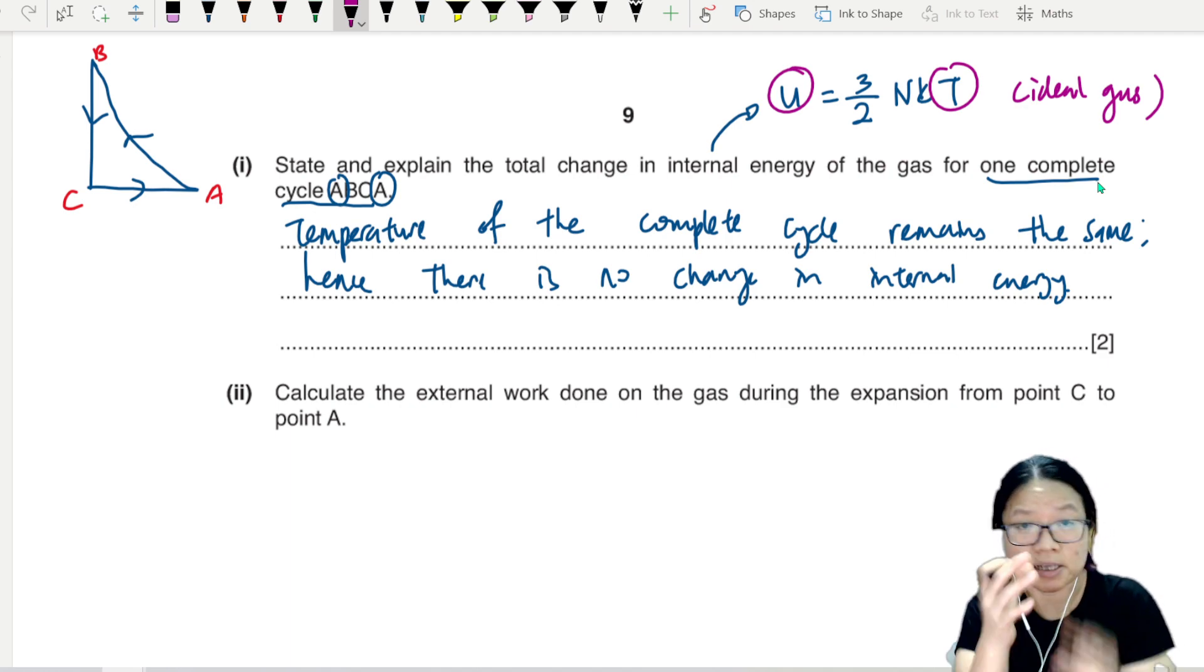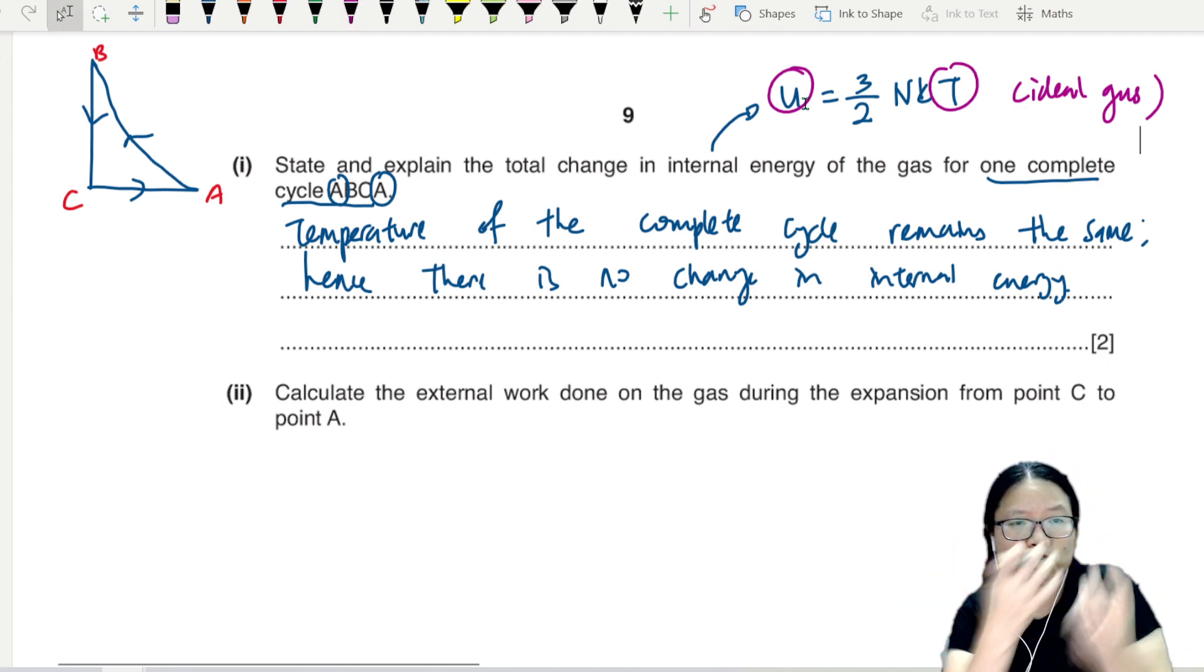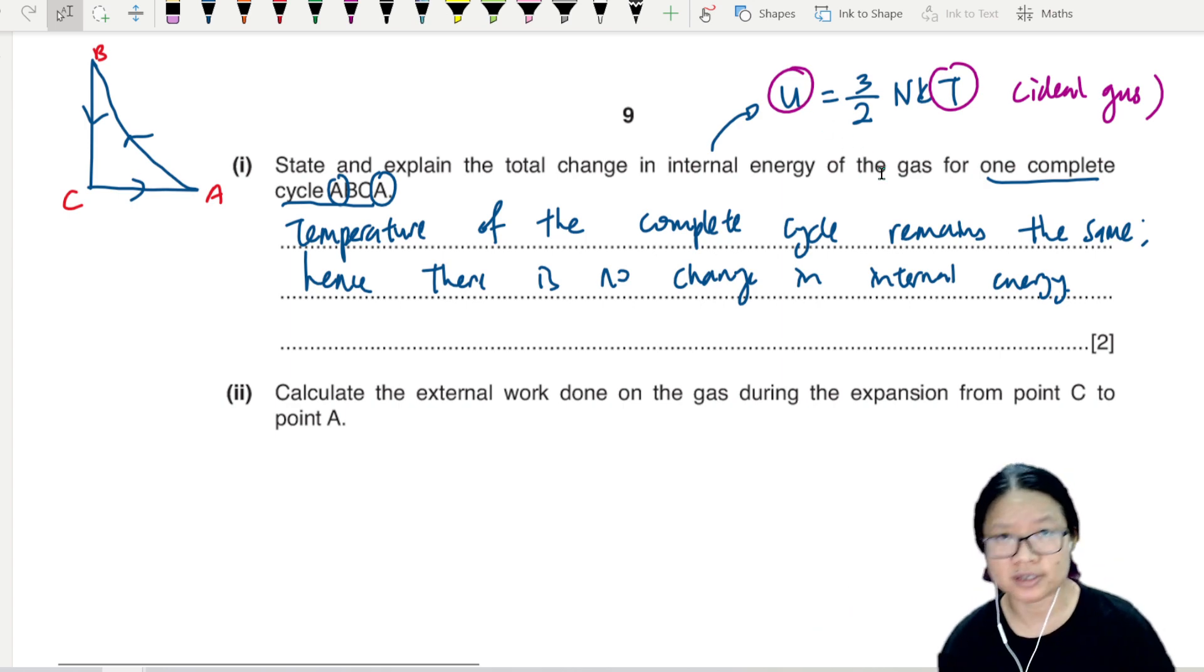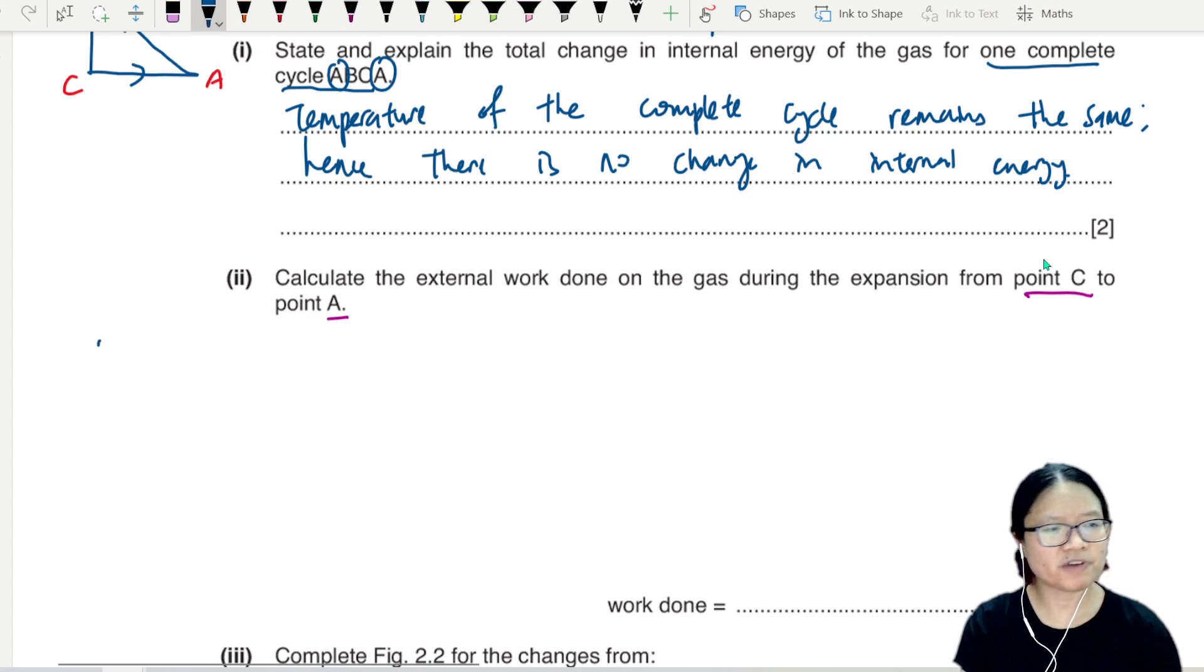So the only thing that can affect your internal energy is your temperature. Internal energy is the molecule vibrating and moving, so the only thing that can make the molecule vibrate and move faster is to increase the temperature. Part two: calculate the external work done during the expansion from C to A.